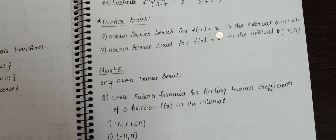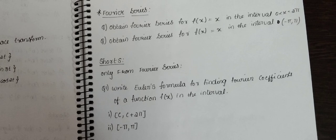For short answer vision on Fourier series: write Euler's formula for finding Fourier coefficients of a function f(x) in the interval (c, c + 2π), and write Euler's formula for f(x) in the interval (−π to π). These are not calculation questions — they are expansions. You just write the Fourier coefficient formulas: a₀, aₙ, and bₙ. If you write these in the short answer, you gain marks easily.